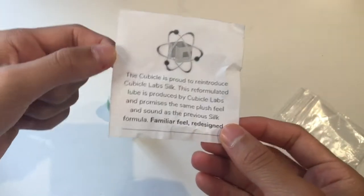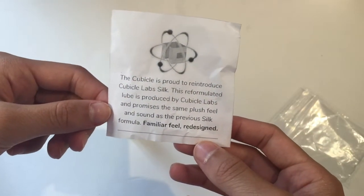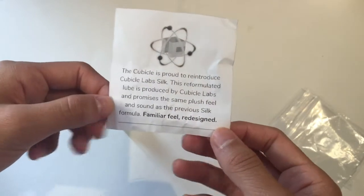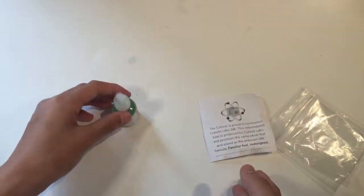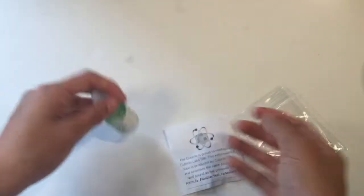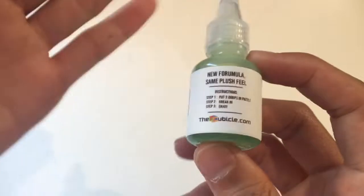The Cubicle is proud to reintroduce Cubicle Labs Silk. This reformulated lube is produced by Cubicle Labs and promises the same plush feel and sound as the previous silk formula. Familiar feel redesigned. So, obviously, as you can tell, this has been redesigned, but I have a feeling it's going to have a soft, sort of quiet feel because it is called silk. Alright, let's just take a look at the actual bottle. It says, new formula, same plush feel again.